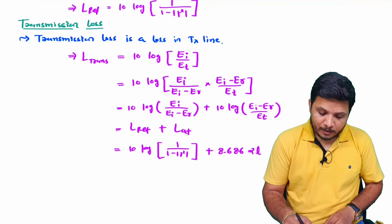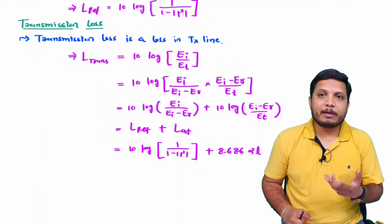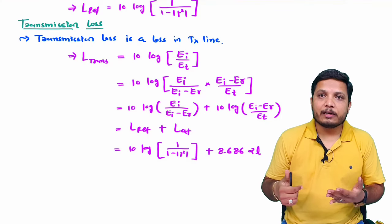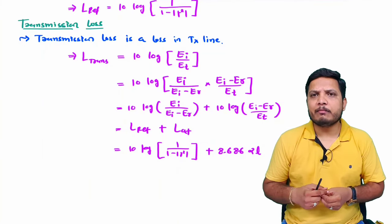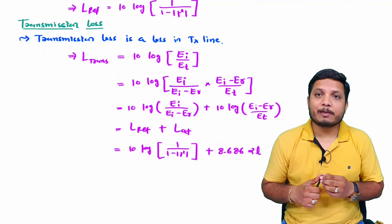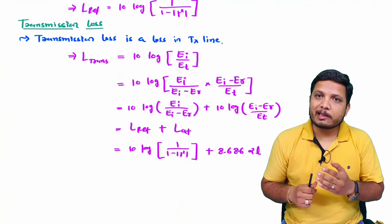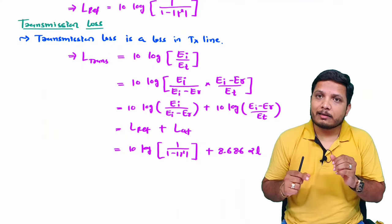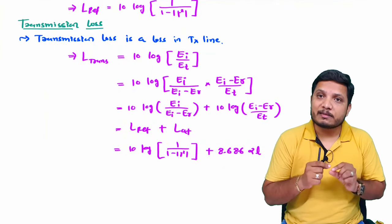Once we have transmission loss, we can identify many other parameters regarding transmission lines, such as VSWR, attenuation constant, and reflection coefficient. There are different types of questions that will come based on these equations. Next, I'll explain return loss, which happens at the port of a transmission line due to impedance mismatch of the port with the transmission line.